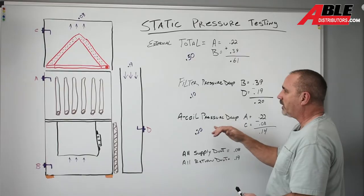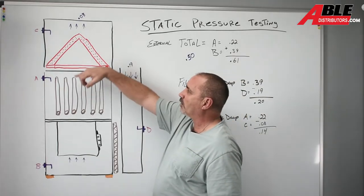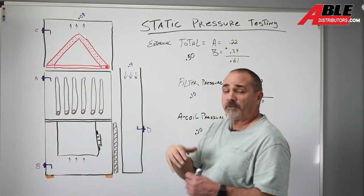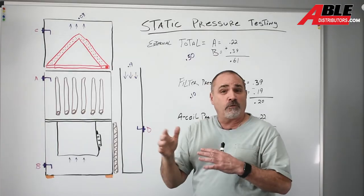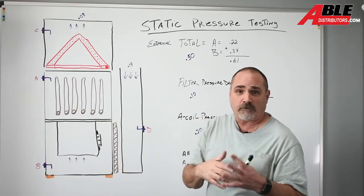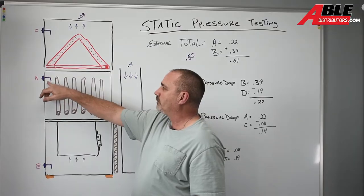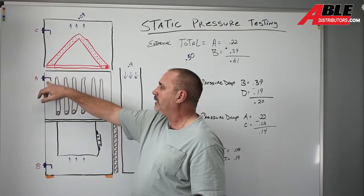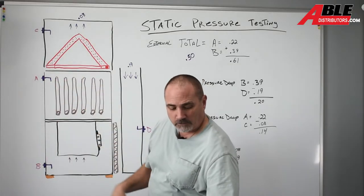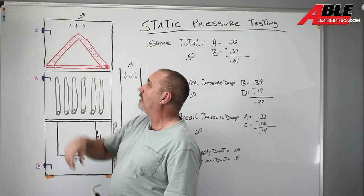So now we're going to check the pressure drop across that A coil. So typically we allow for 0.2 across the A coil depending on the coil. An N coil from Carrier might be more. So we put the probe back in at position A facing down. We're going to make a hole in the plenum above the A coil. Again, face the probe down.